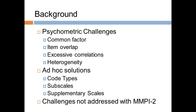Tellegen and Ben-Porath identified this common factor as demoralization — a really important new construct not on the original MMPI. It's a broad, pervasive, mood-laden dimension best described as unhappiness, dissatisfaction with one's life, and a general sense of hopelessness that things will get better. Welsh had originally named the first factor anxiety and called it Factor A, but it's actually a much broader concept than that. Tellegen and Ben-Porath developed a specific scale to measure demoralization and then statistically removed it from each of the basic scales, restructuring each basic scale to measure a relatively homogeneous major distinctive core construct apart from demoralization.